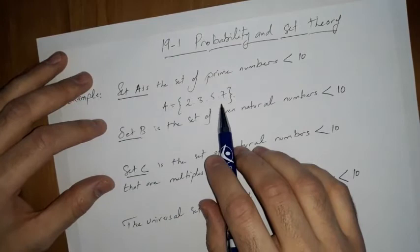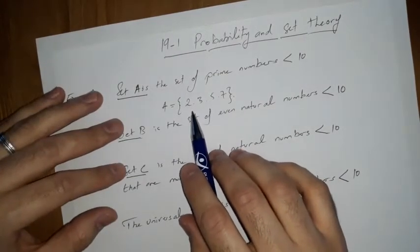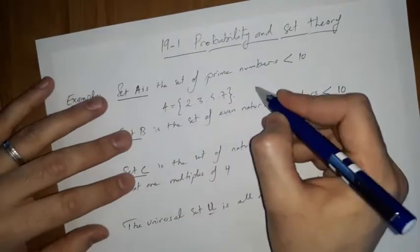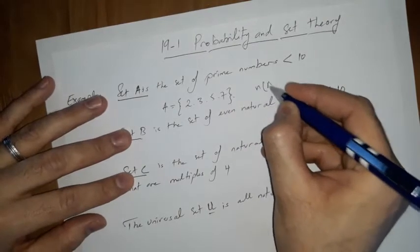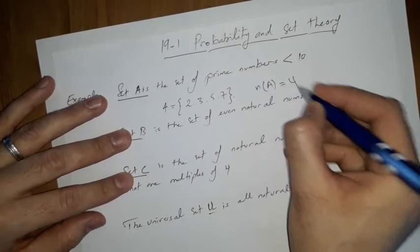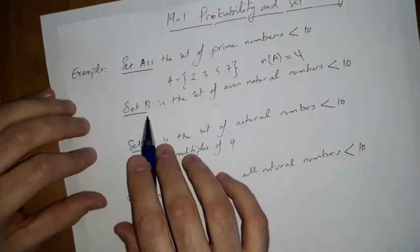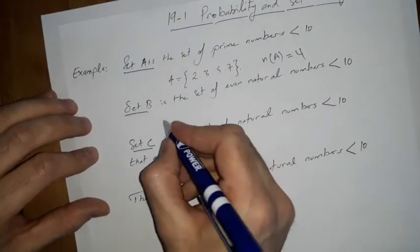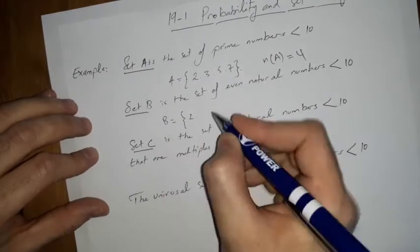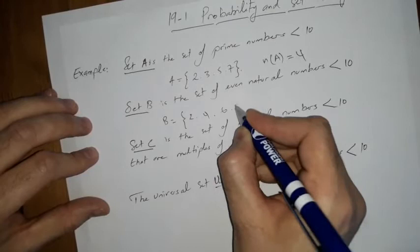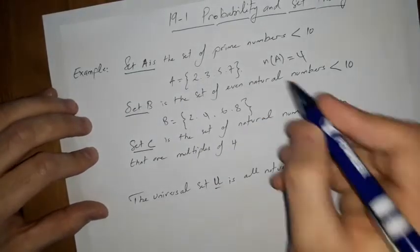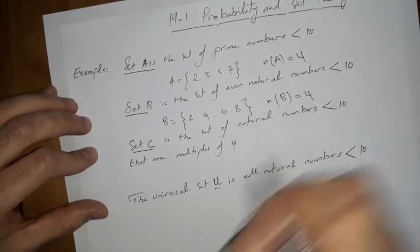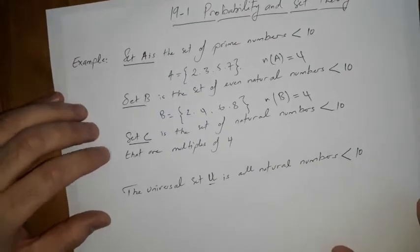Let's check how many numbers are in set A: one, two, three, four — so we have four elements. We write n(A) = 4. Now set B is the set of even natural numbers less than 10, so B = {2, 4, 6, 8}.